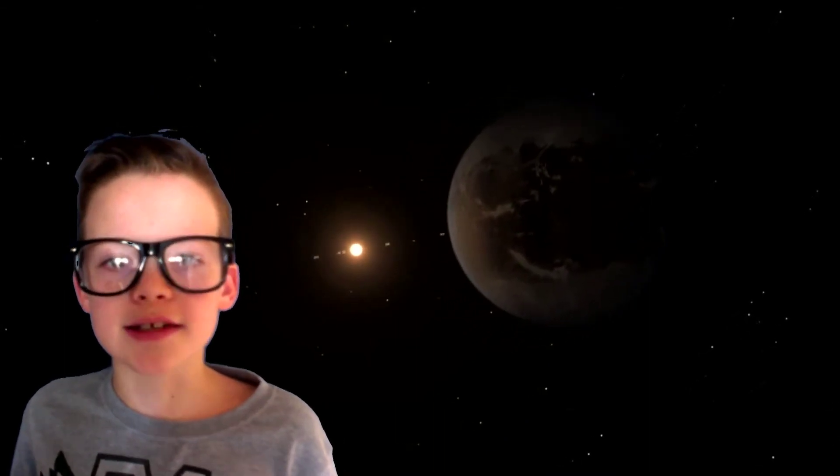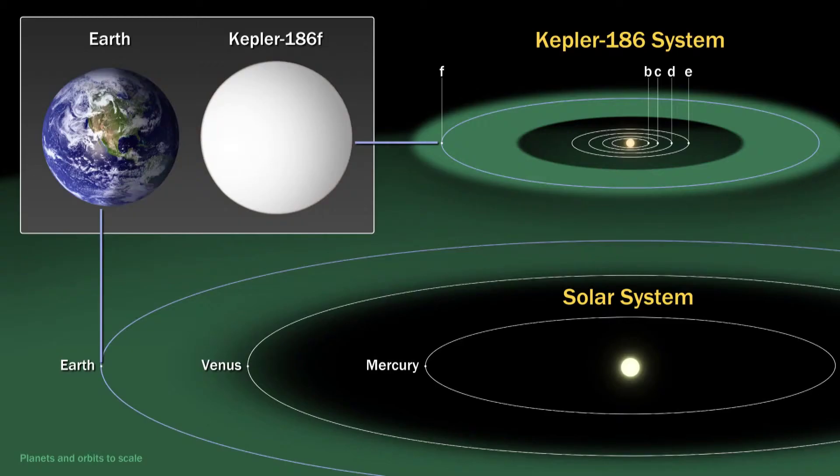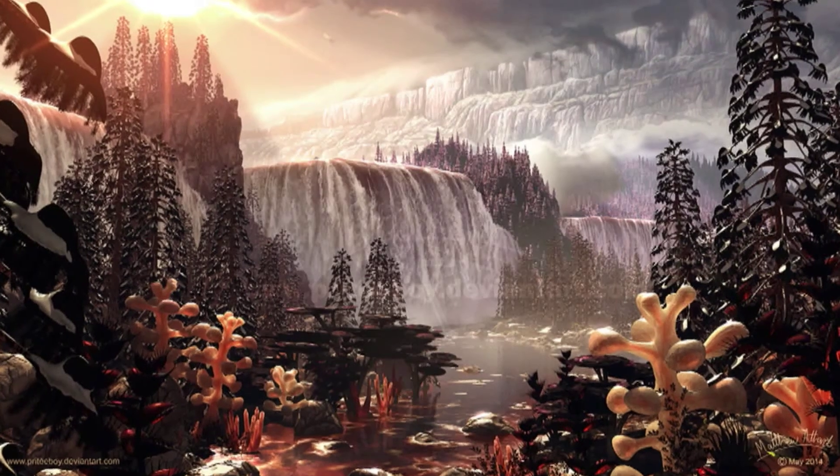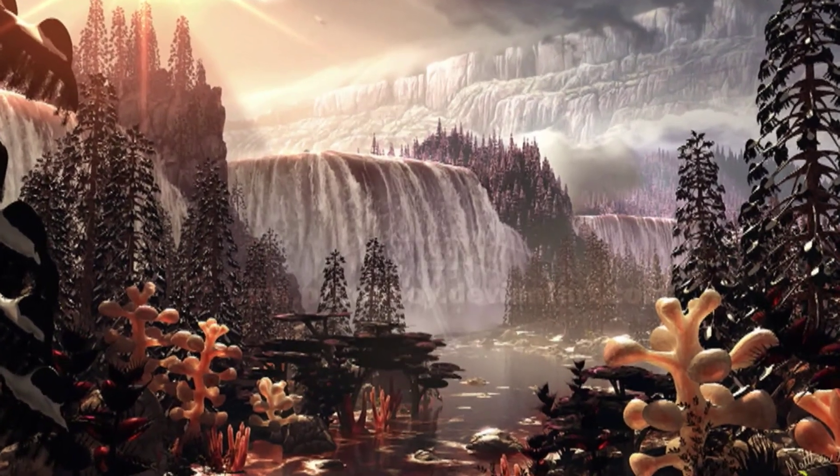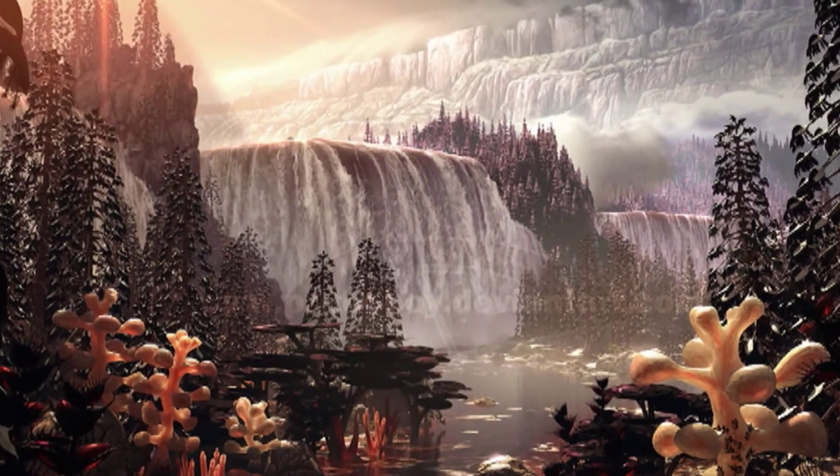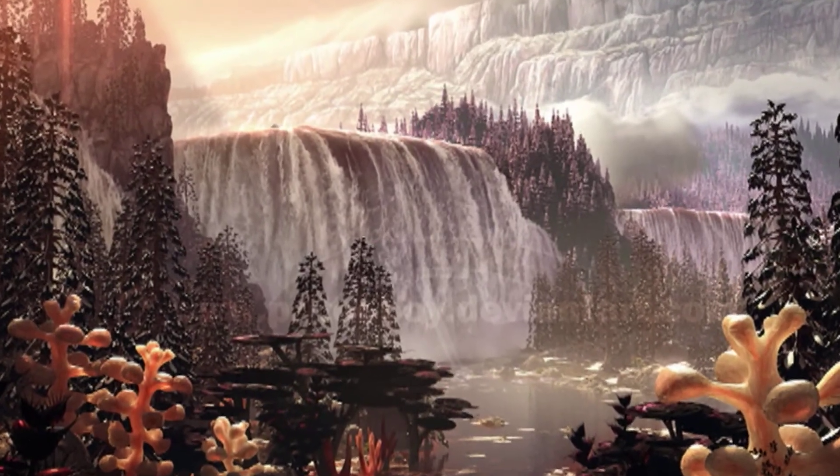A researcher from SETI, Search for Extraterrestrial Intelligence, said that although we do not know for certain what the planet is made of, the fact that we know some information about its mass, radius, and distance from its star shows that it could indeed be like Earth and made of rocky ground, iron cores, water, and ice. If this is true, it could support life.